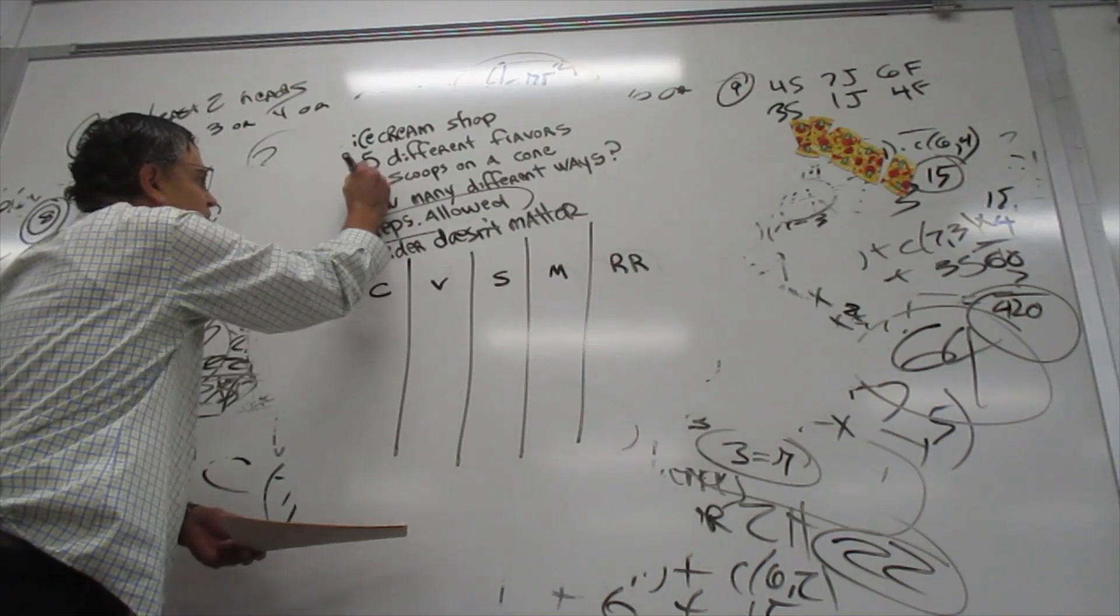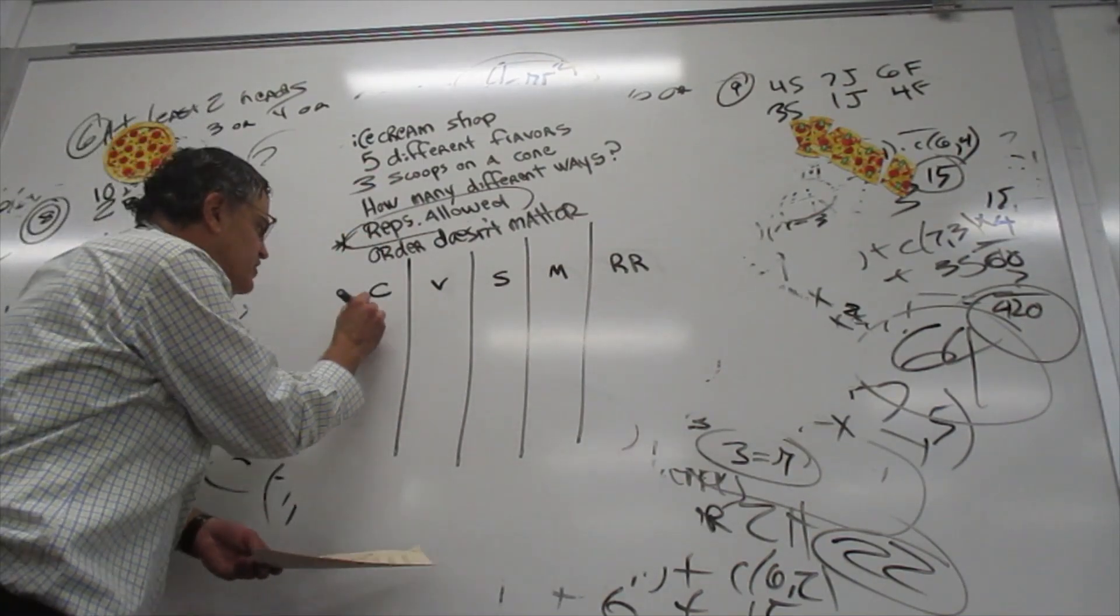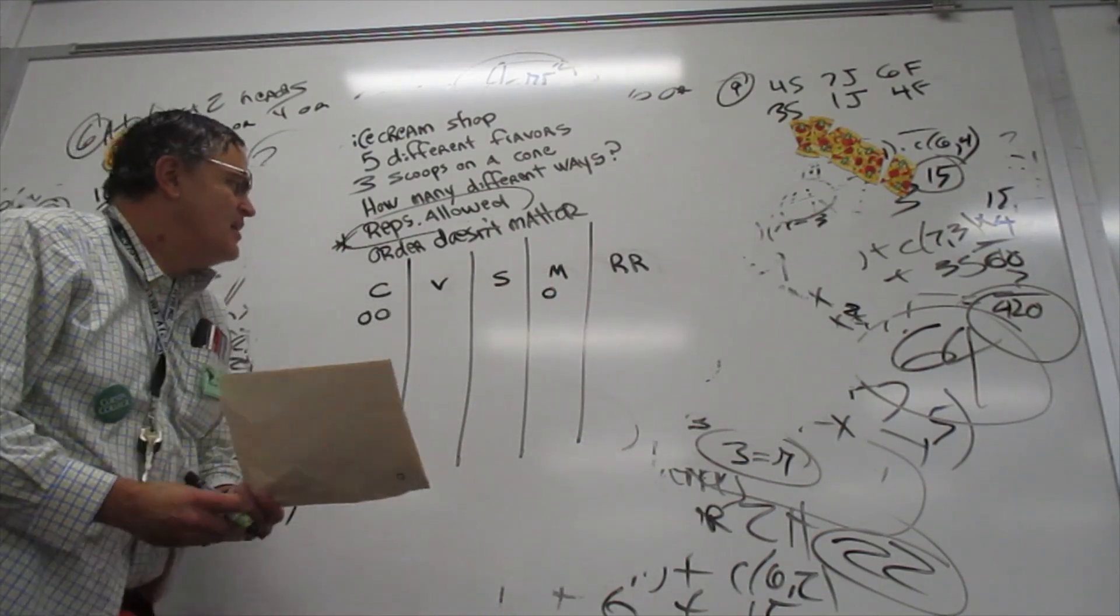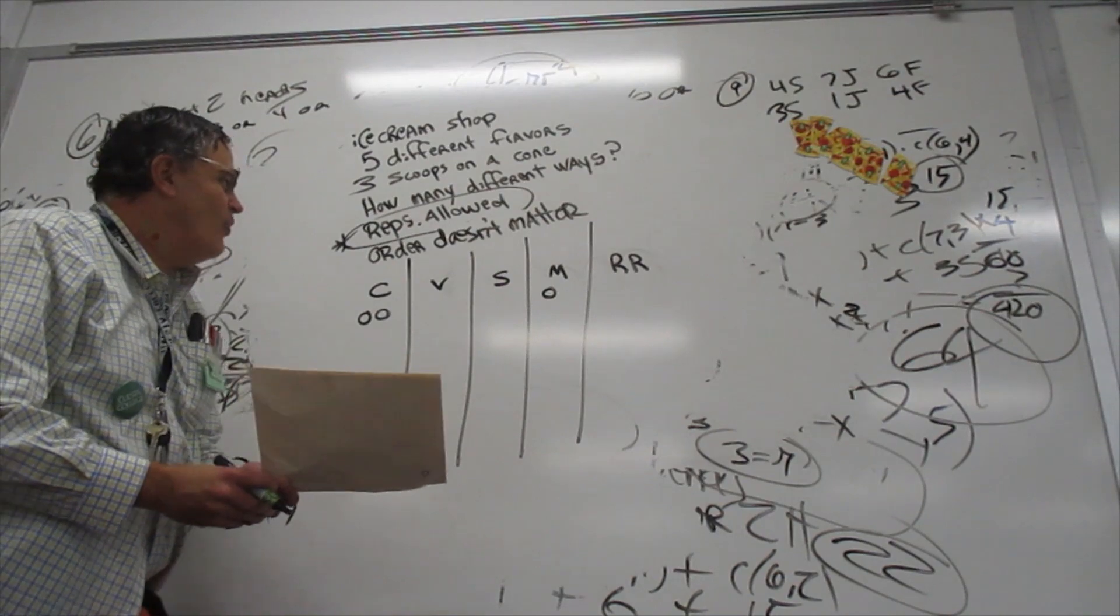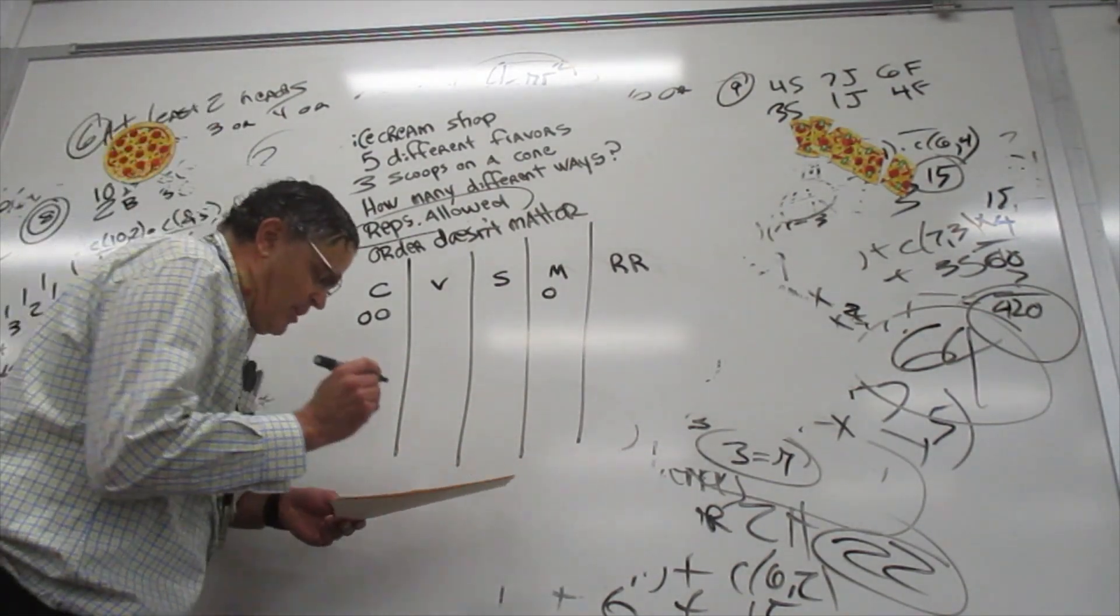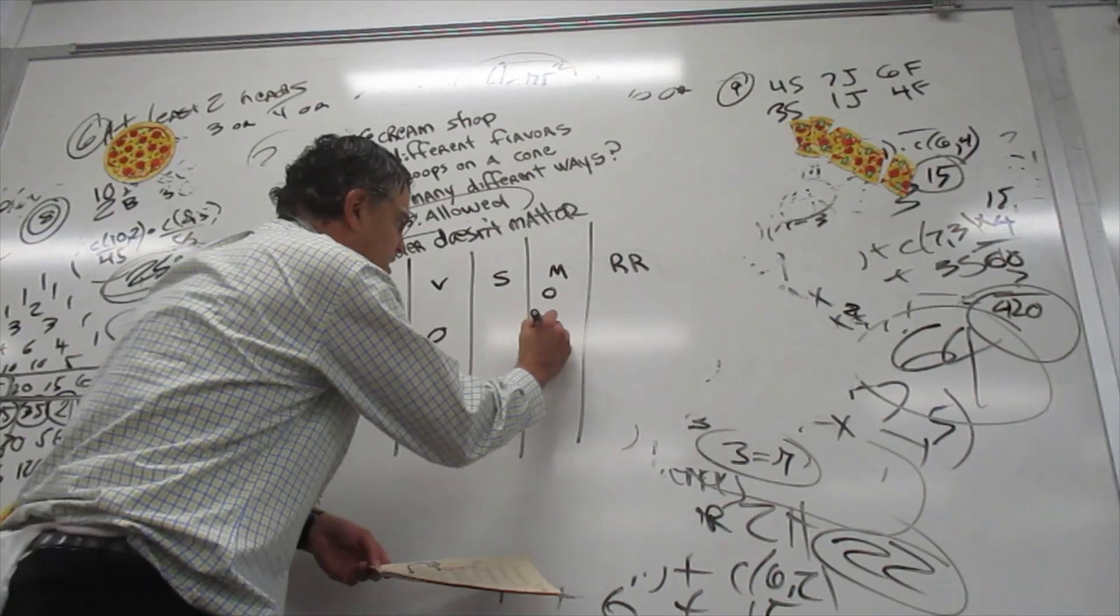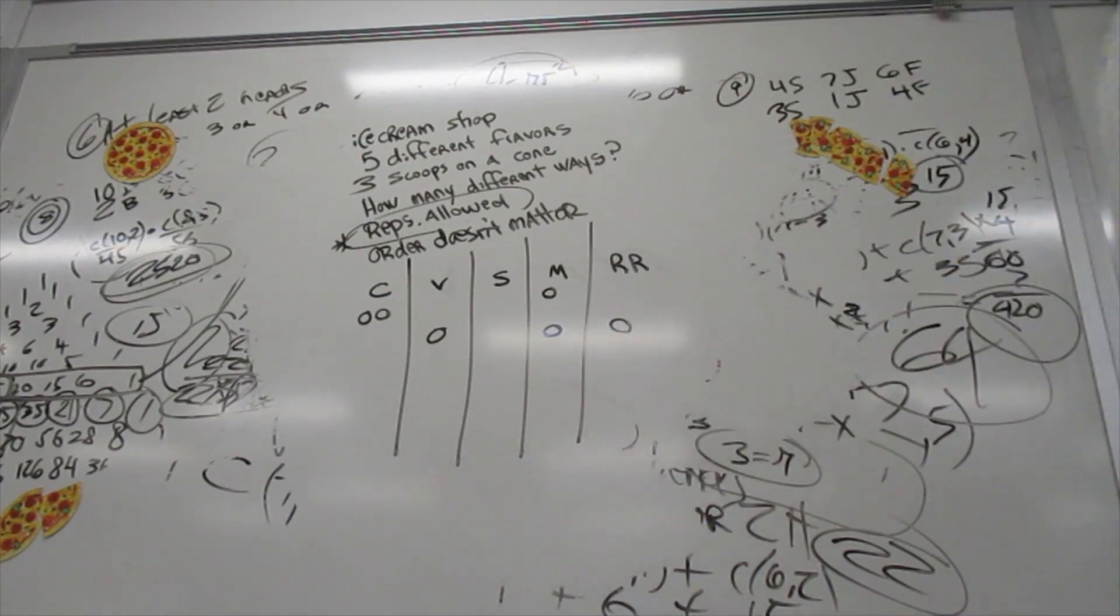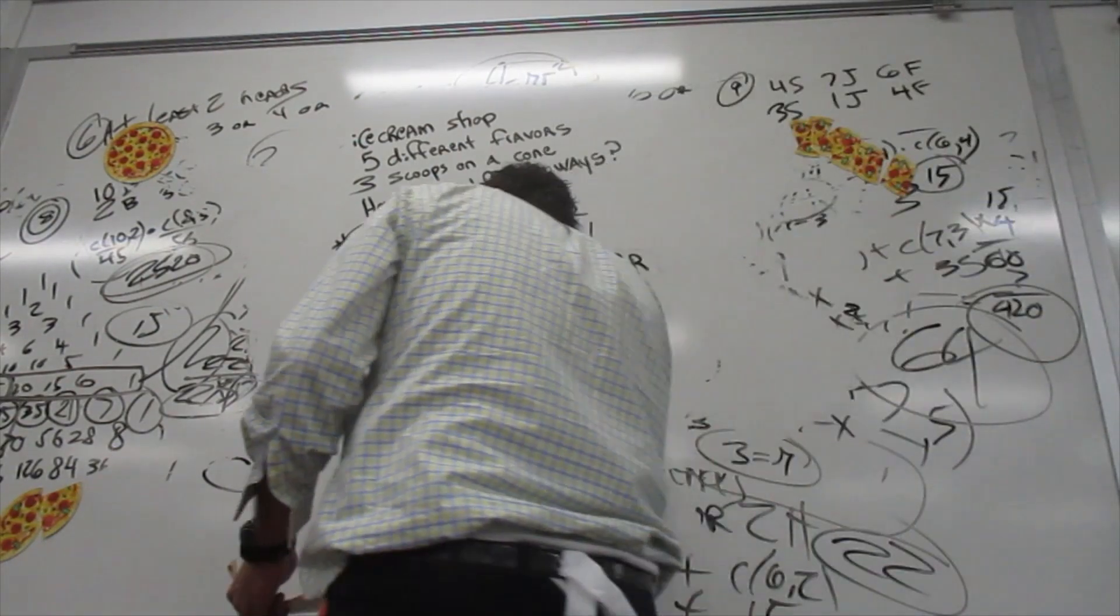And I want two chocolate scoops and one mint and chip. Now order doesn't matter, so they're going in a bowl maybe. You could say, I want a vanilla, a mint and chip, and a Rocky Road. Or you can say, I want three strawberry scoops.